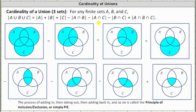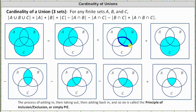Similarly, we count the number of elements in A and C once here, and then we count them a second time when we count the number of elements in C here. Of course, we only want to count these elements once, which is why we subtract them once here. We also count the number of elements in B and C once here, a second time here, and of course we only want to count these elements once, and therefore we subtract them once here.